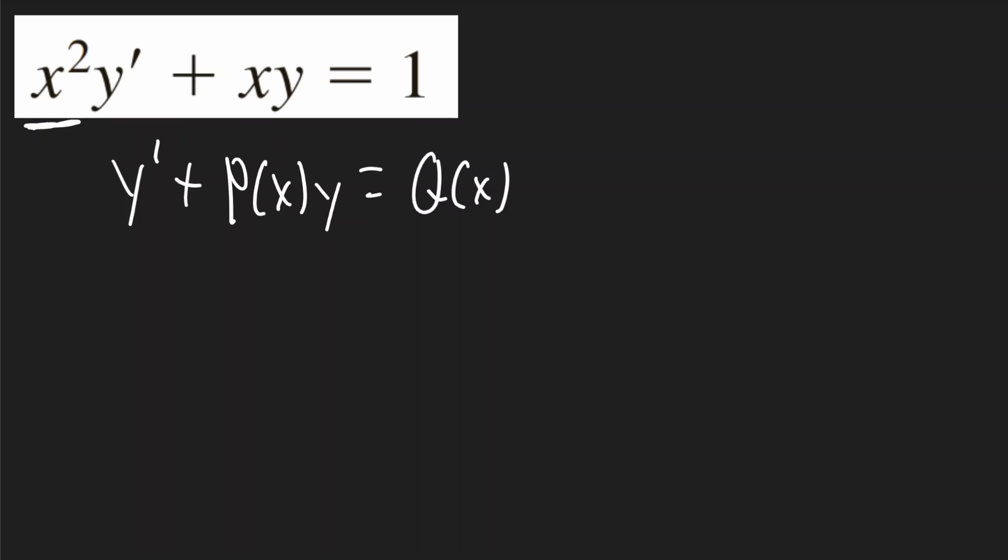On the first term with the y prime, there's an x squared. So I'll divide all the terms in the original equation by x squared. It'll look like this.